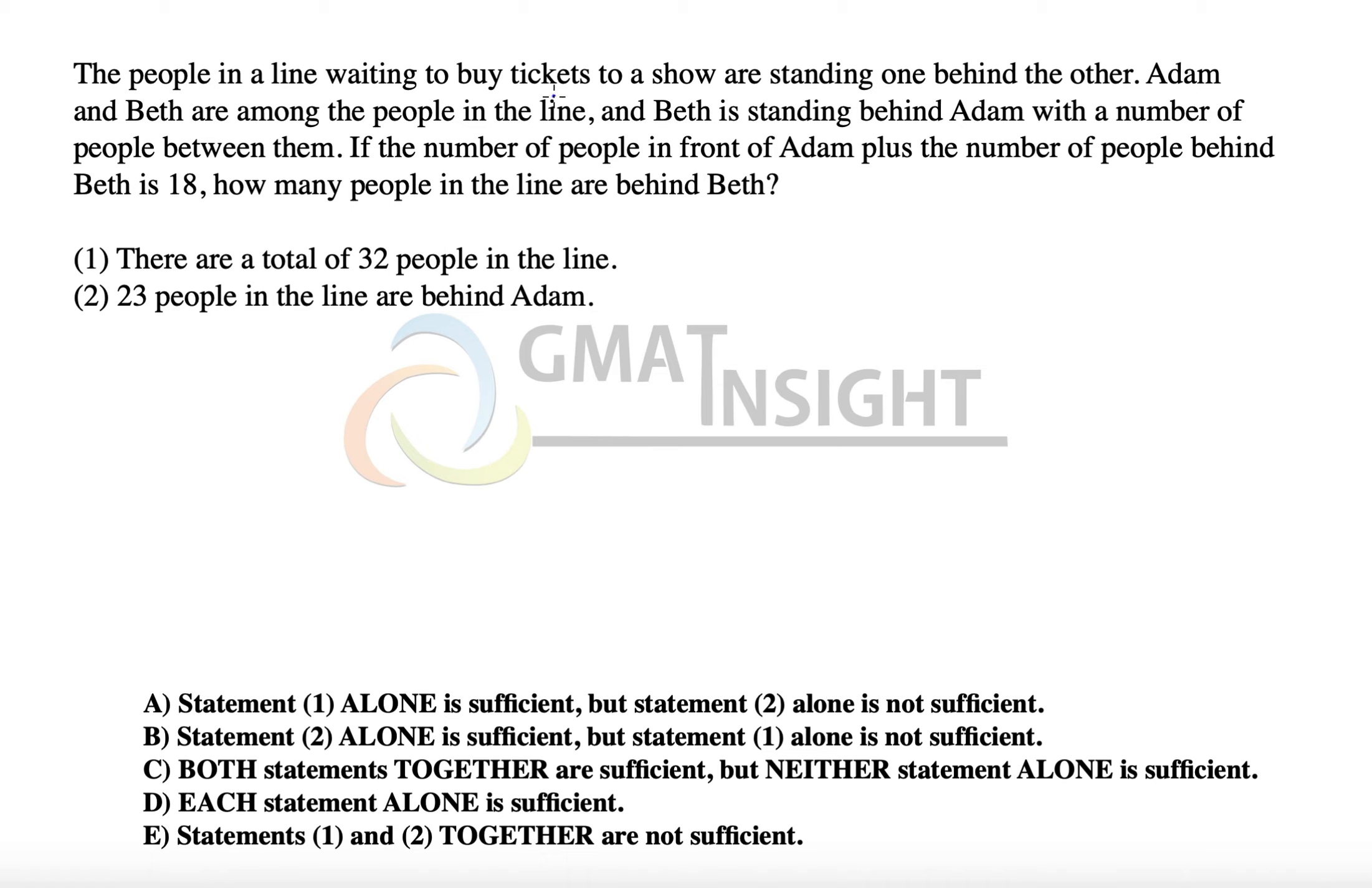The people in a line waiting to buy tickets to a show are standing one behind the other. Adam and Beth are among the people in the line and Beth is standing behind Adam with a number of people between them.